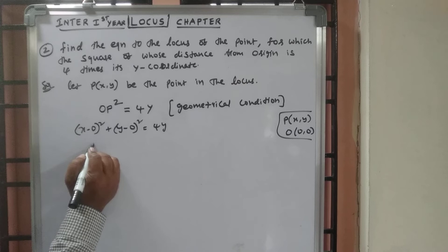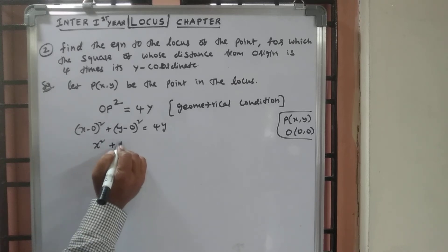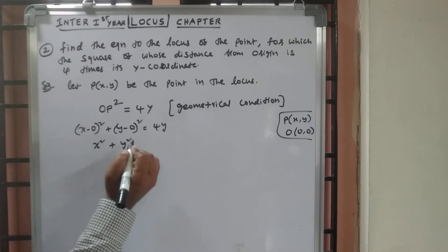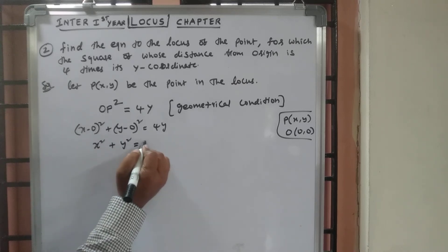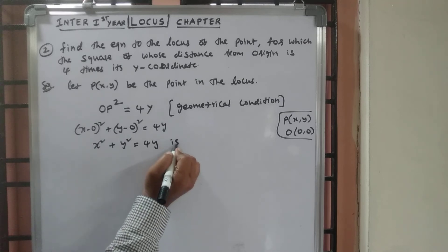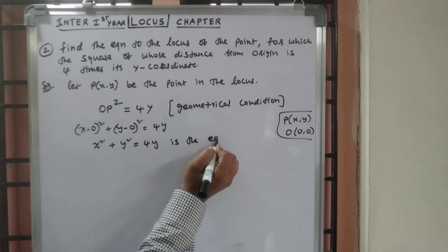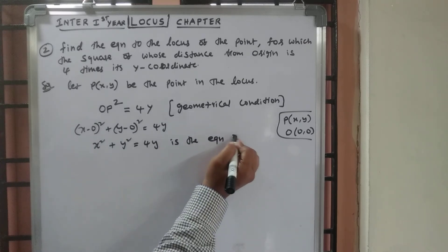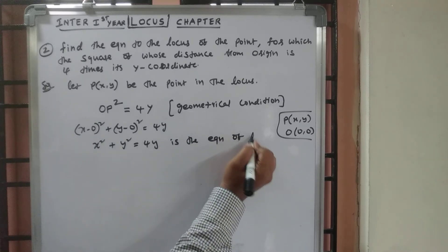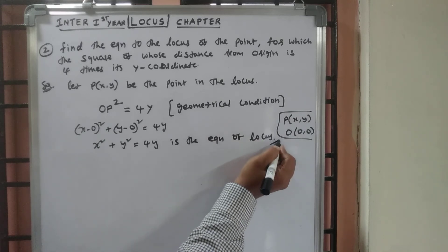Simplifying: x² + y² = 4y. This is the equation of the locus.